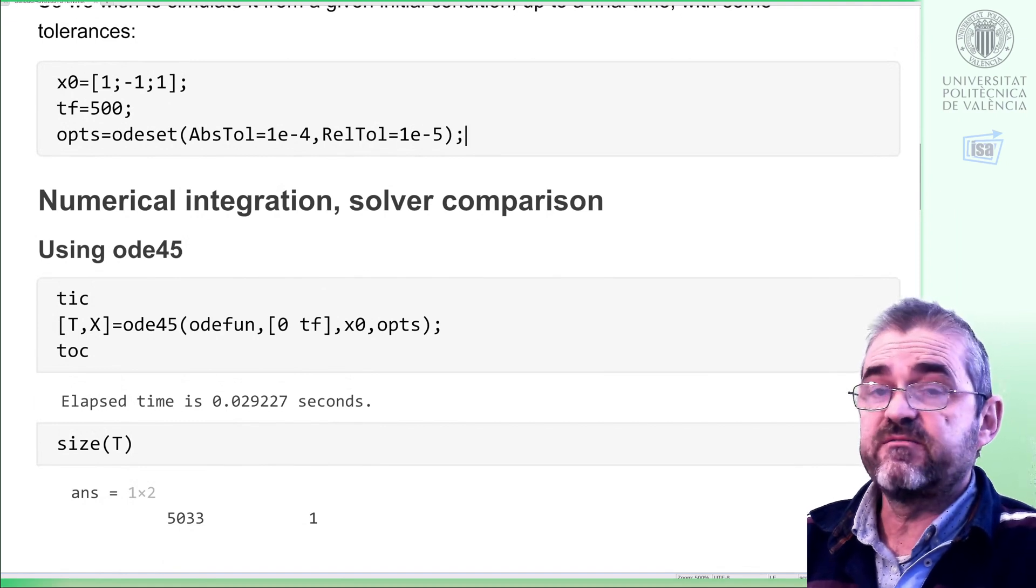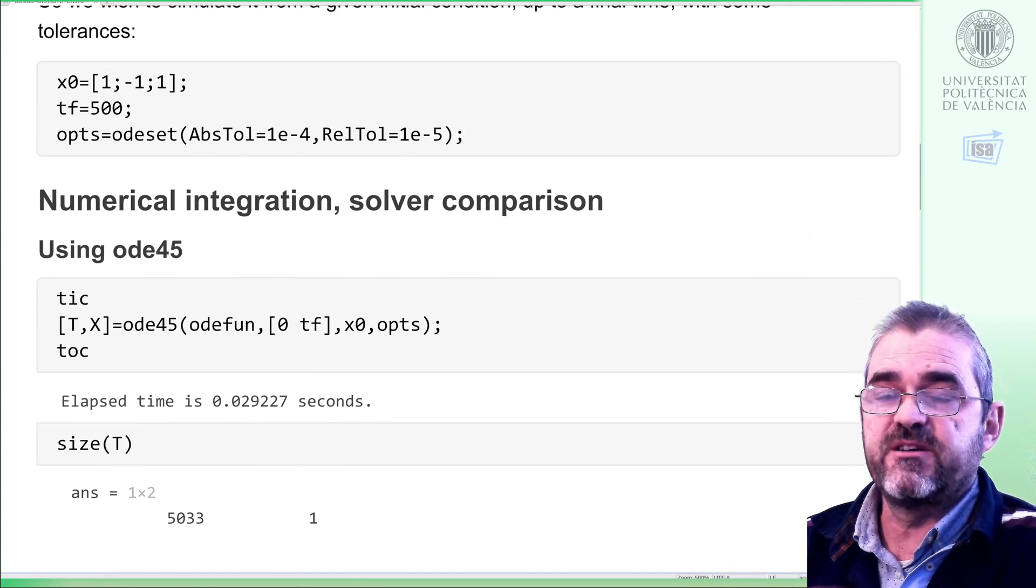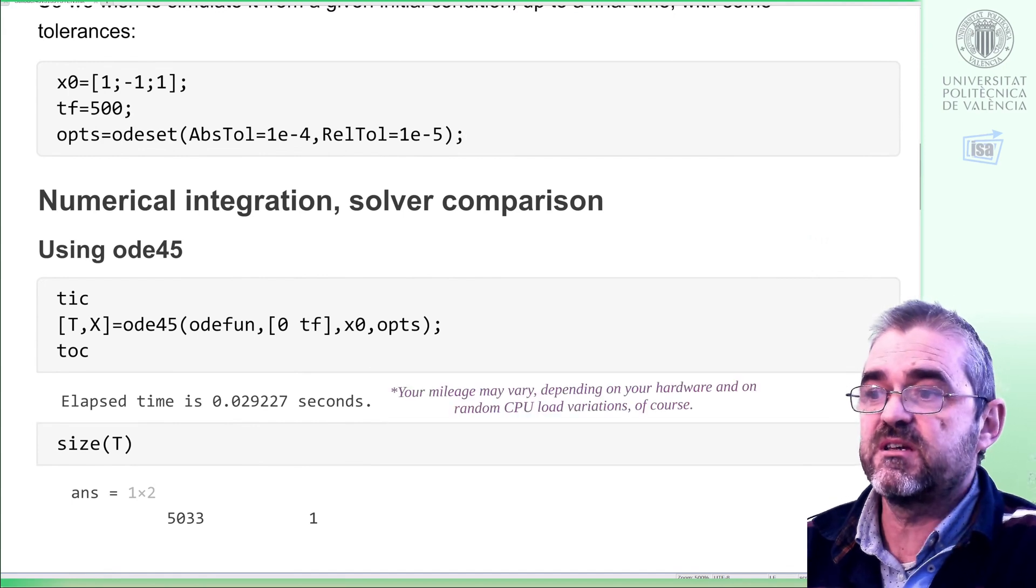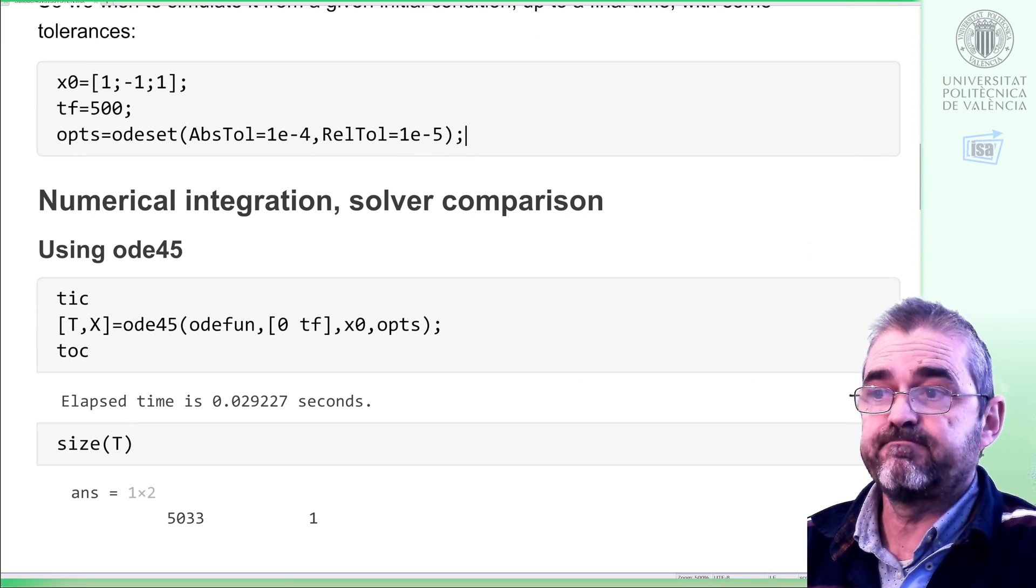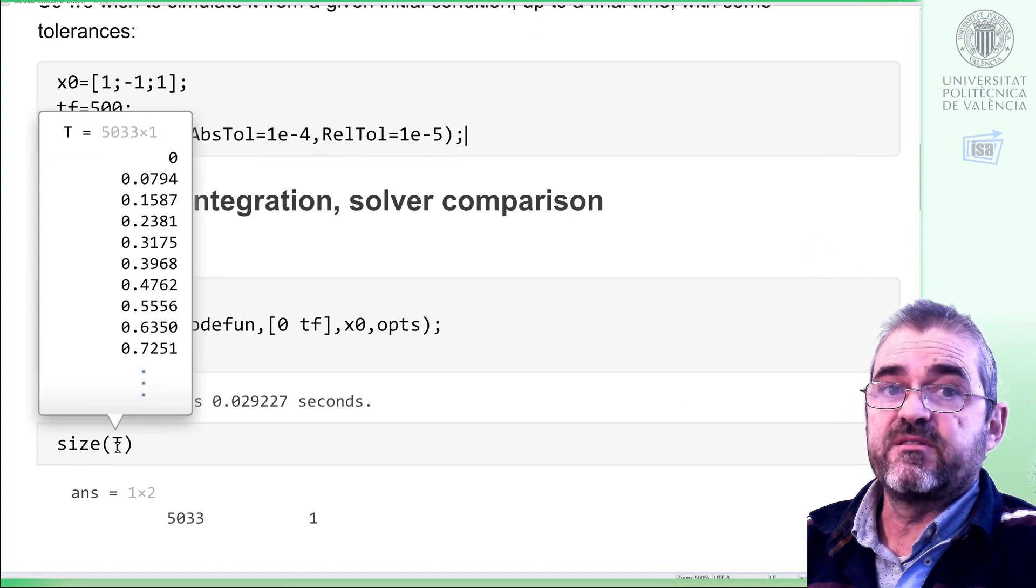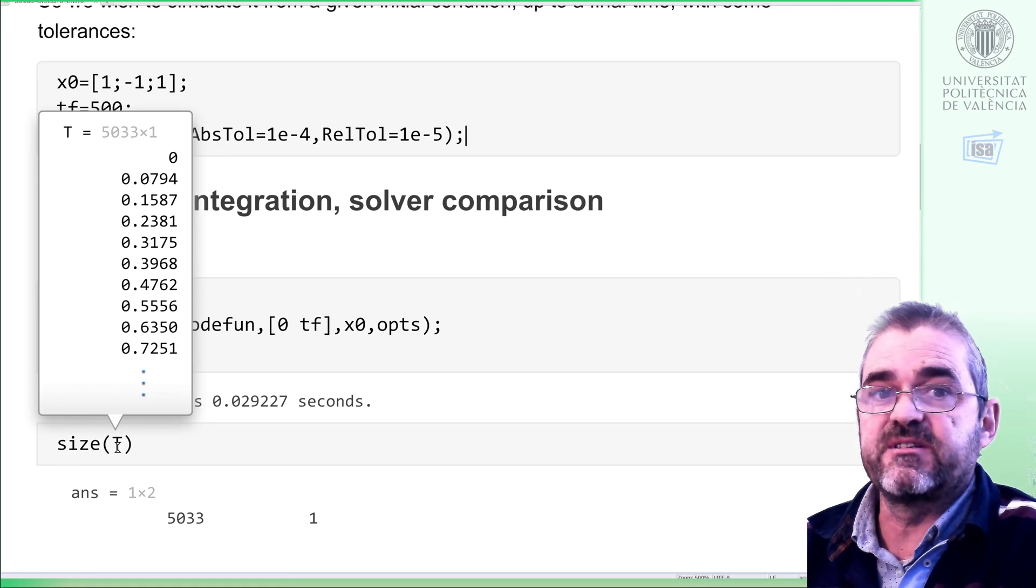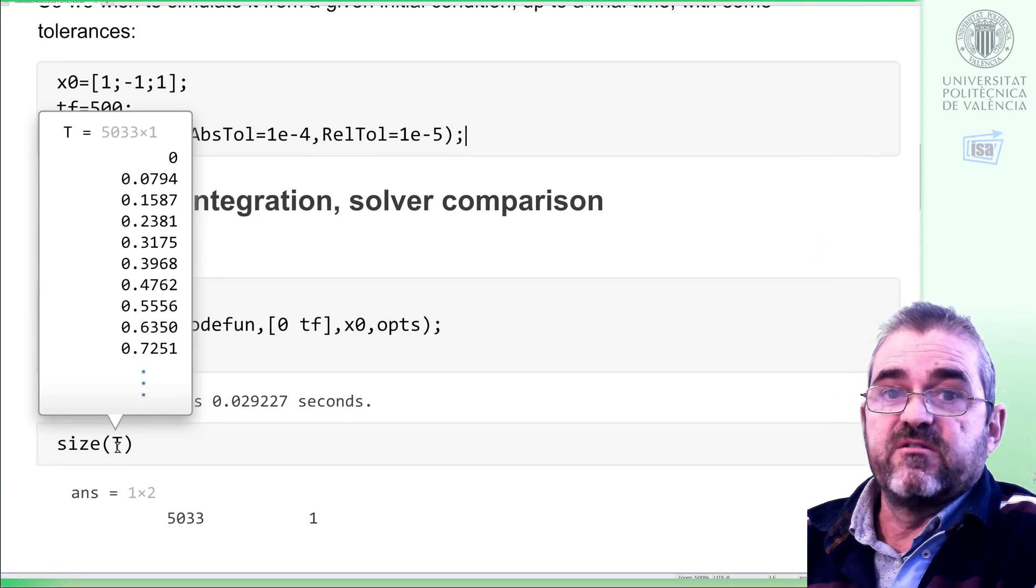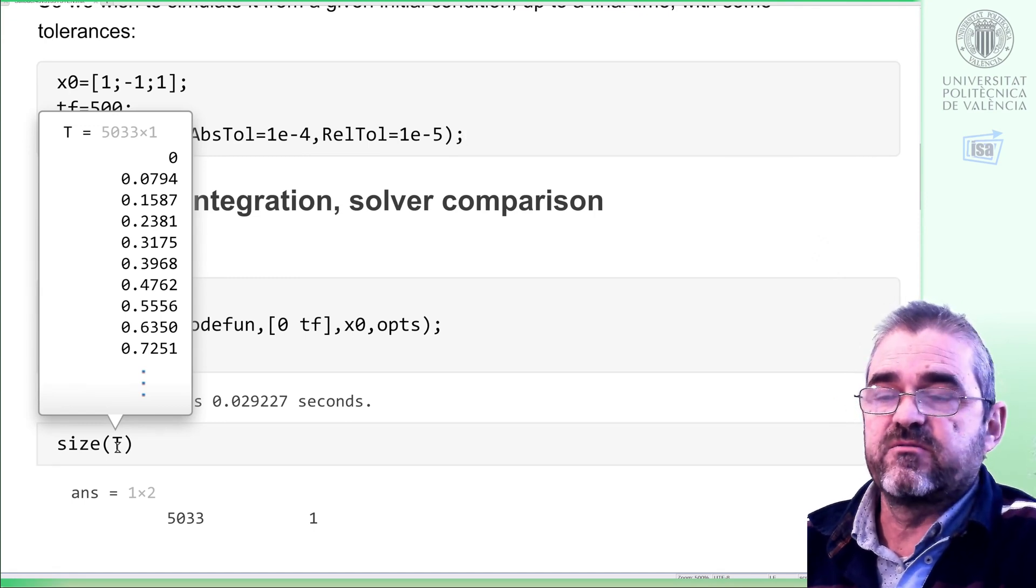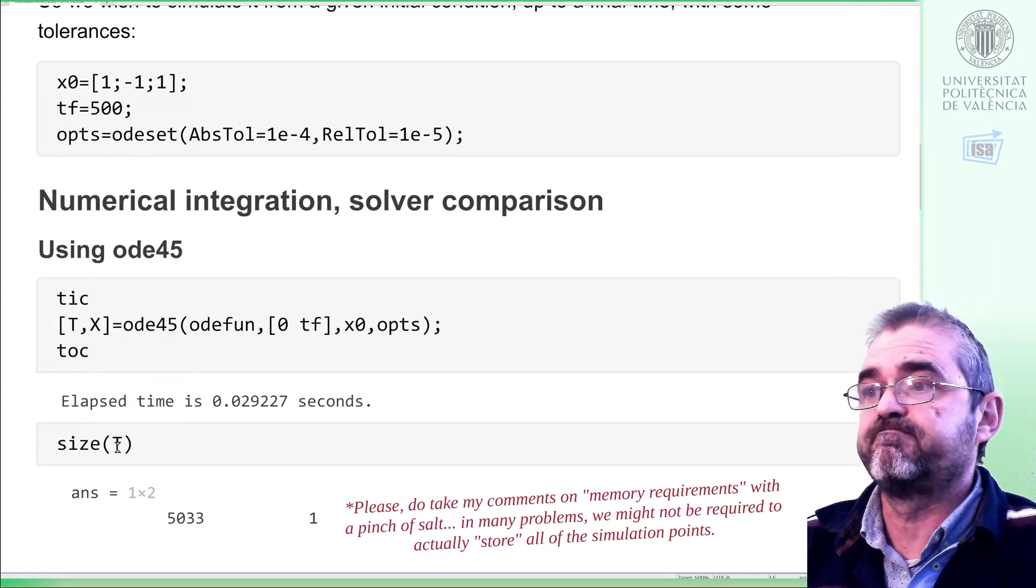We will now execute and see how the solvers behave. ODE45 is the first solver that MATLAB recommends as the basic first choice. Try this and if this doesn't suit you, then try something else. In this case, it took 29 milliseconds, 5000 points to achieve this accuracy and the sampling period, at least in the initial steps because it's a variable size integration. So depending on the accuracy, the increment of time between simulation steps will be larger or smaller, depending on how fast things are moving.